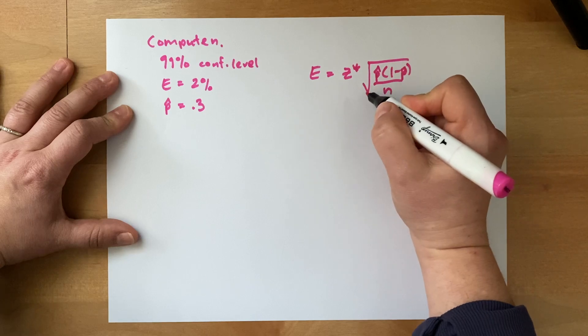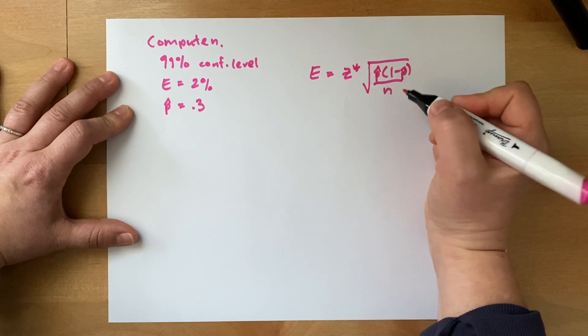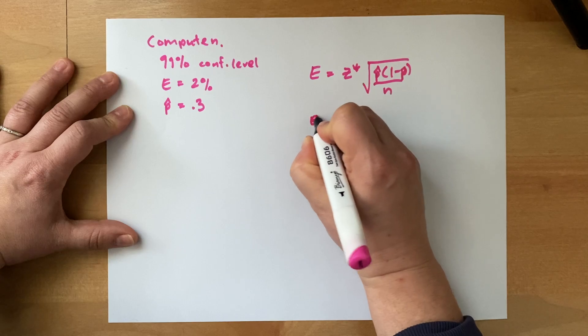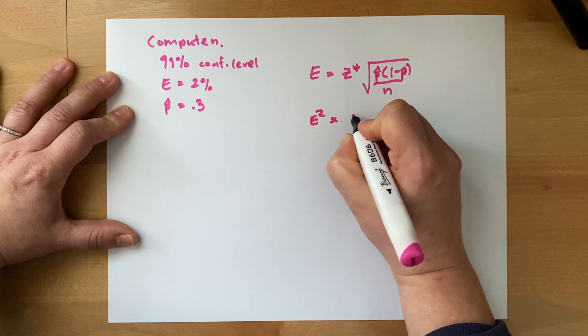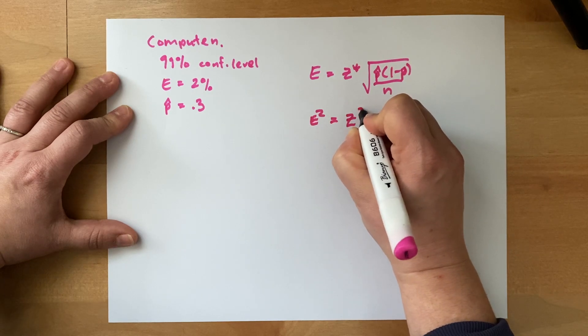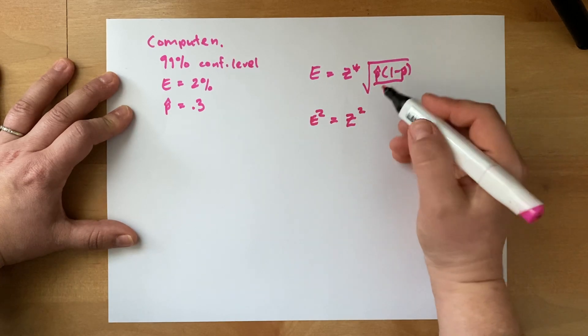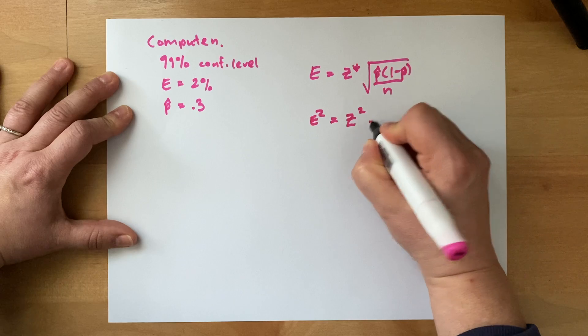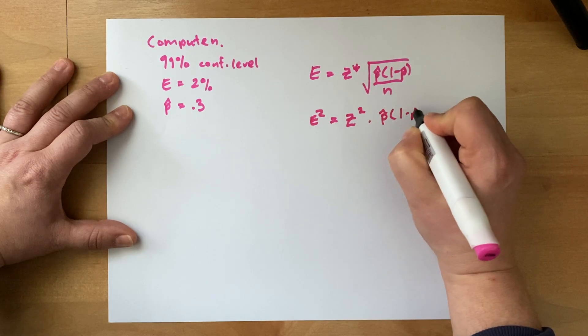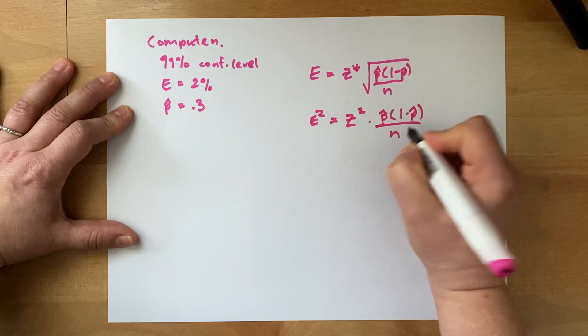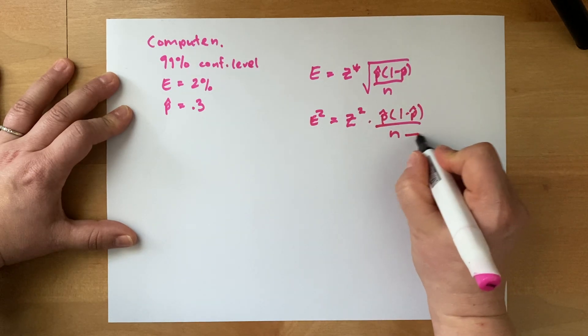So what do we do to get rid of a square root? We square both sides of an equation. So that would leave us with e squared, or error squared, is equal to z squared. I'm going to leave off the star for right now just to make it a little less cluttered. And squaring a square root just gets us back to p hat times 1 minus p hat divided by n.